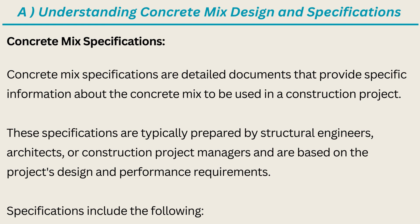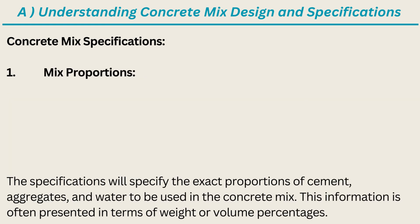Specifications include the following. Item 1: Mix Proportions. The specifications will specify the exact proportions of cement, aggregates, and water to be used in the concrete mix. This information is often presented in terms of weight or volume percentages.